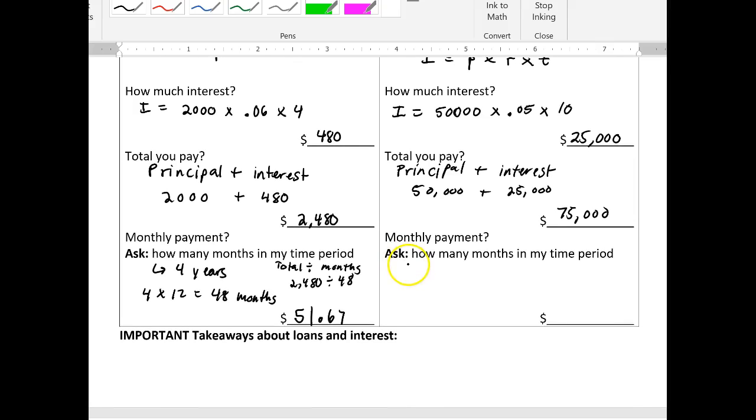So again, what's my monthly payment? So 10 years equates to 10 times 12, which is 120 months. I'm just going to take my total divided by the months. So $75,000 divided by 120 months, gets me $625 a month.